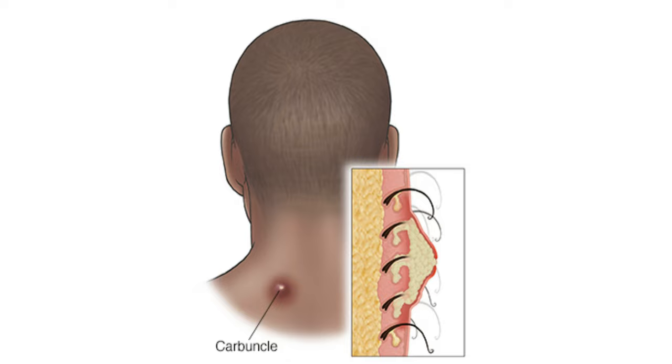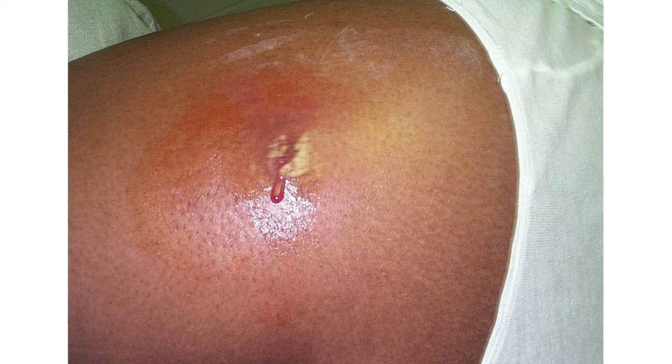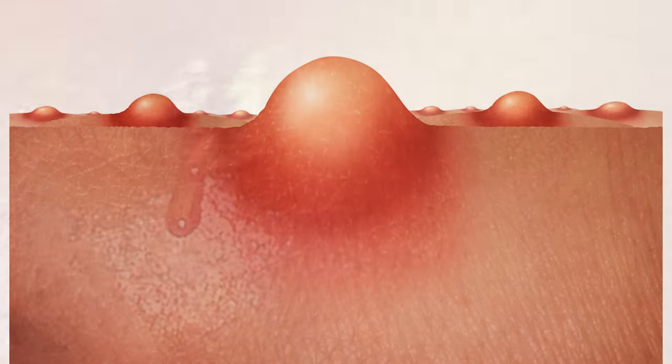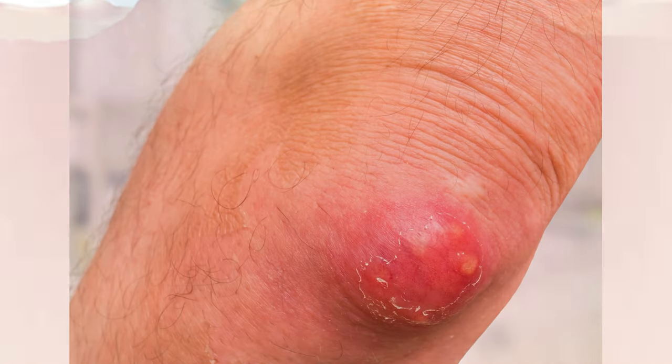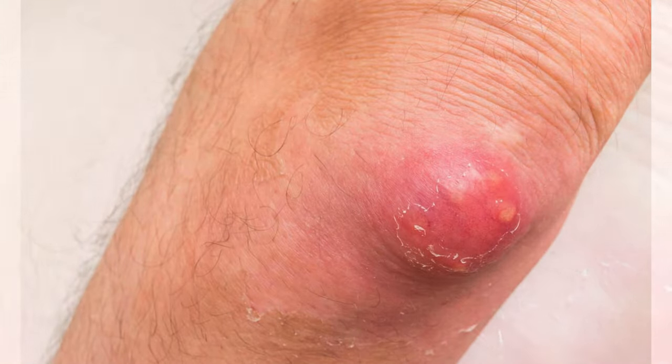What are boils and carbuncles? A boil, or furuncle, is a pus-filled bump that develops in your skin. Carbuncles are clusters of several boils. Boils usually begin as red bumps, which quickly increase in size and fill with pus.